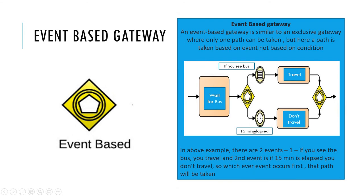Next is event-based gateway. An event-based gateway is similar to an exclusive gateway where only one path can be taken, but here a path is taken based on an event, not based on a condition. In the example, there are two events: a condition event where if you see the bus, you travel; and a clock event, where if 15 minutes have elapsed, then you don't travel. So either of the events will be executed.